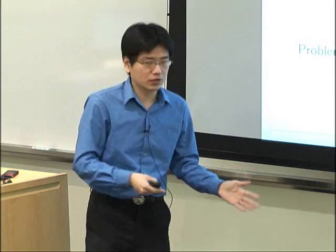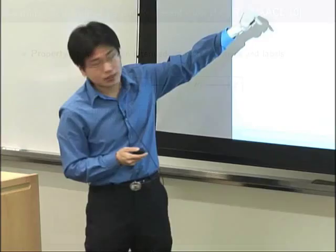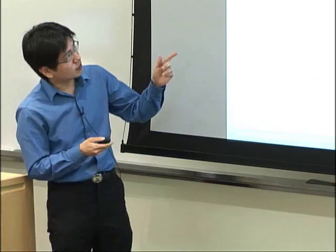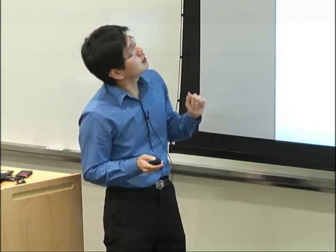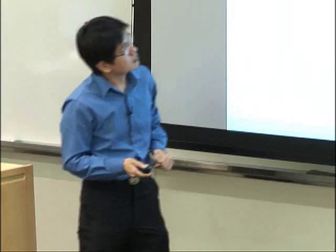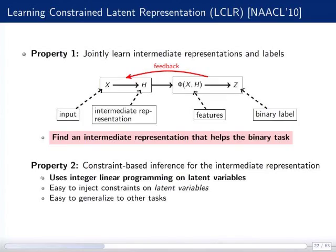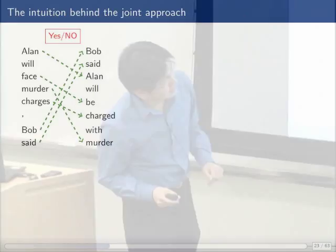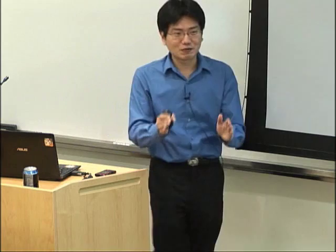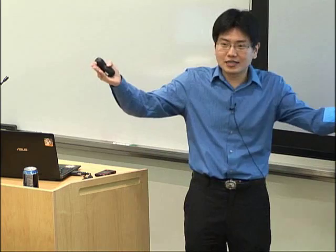Our framework called LCLR jointly learns the intermediate representations and labels. X is the input, H is the intermediate representation, these are the features, and these are the binary labels. We want to use the binary output to feedback and find a better intermediate representation. The second property is we want to use constraint-based inference for intermediate representations, making it easy to inject knowledge for latent variables and easy to generalize to other tasks. The justification: only positive examples have good intermediate representations. If two sentences are paraphrases, there must exist an alignment that ensures they carry the same information. If they are not paraphrases, you cannot find an alignment that justifies this. So there is a connection between the output and the intermediate representation.